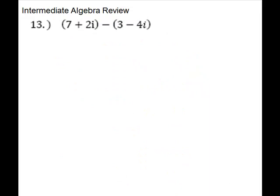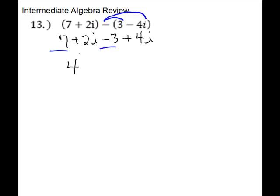Our next three problems work with complex numbers, and we'll simplify and write answers in standard form. Problem 13 is subtracting complex numbers — treat the i like a variable. Always distribute your minus sign. Nothing changes on the first parenthesis; for the second, the minus gives us negative 3, and two negatives give us positive 4i. Then combine like terms: 7 and negative 3 give us 4, and for the i terms, 2 plus 4 gives us 6, so the answer is 4 plus 6i.